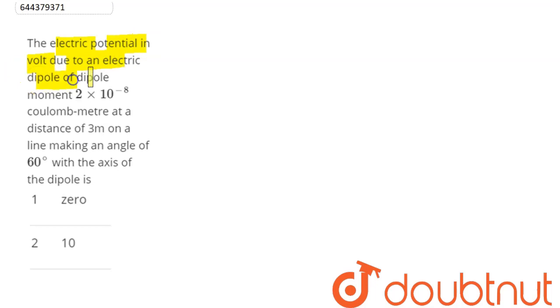of dipole moment 2 × 10^-8 coulomb meter at a distance of 3 meter on a line making an angle of 60 degree with the axis of the dipole is